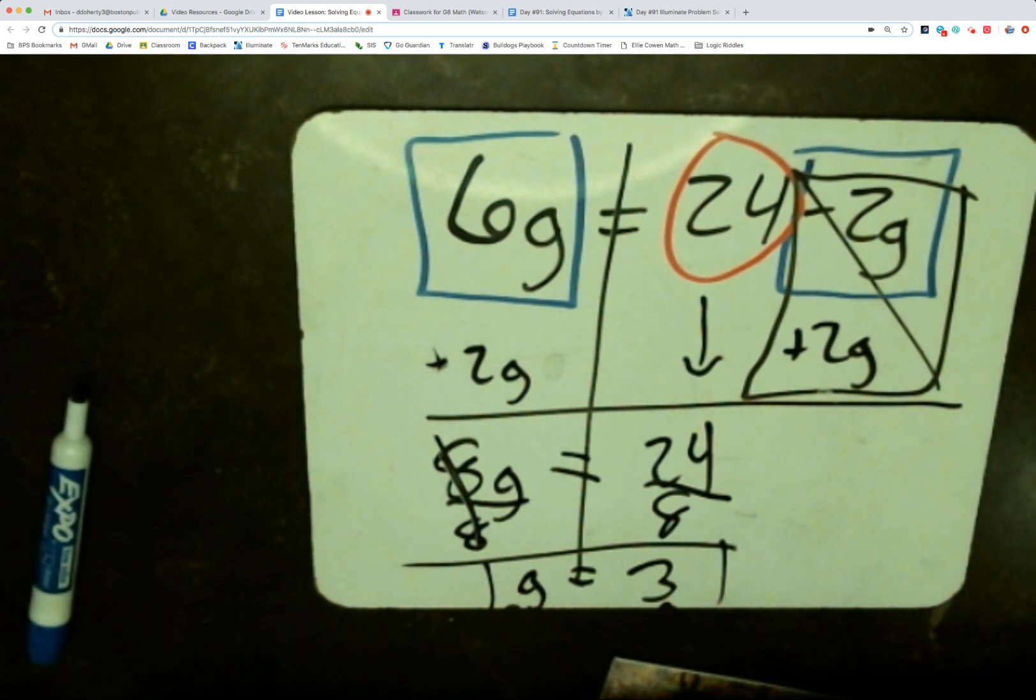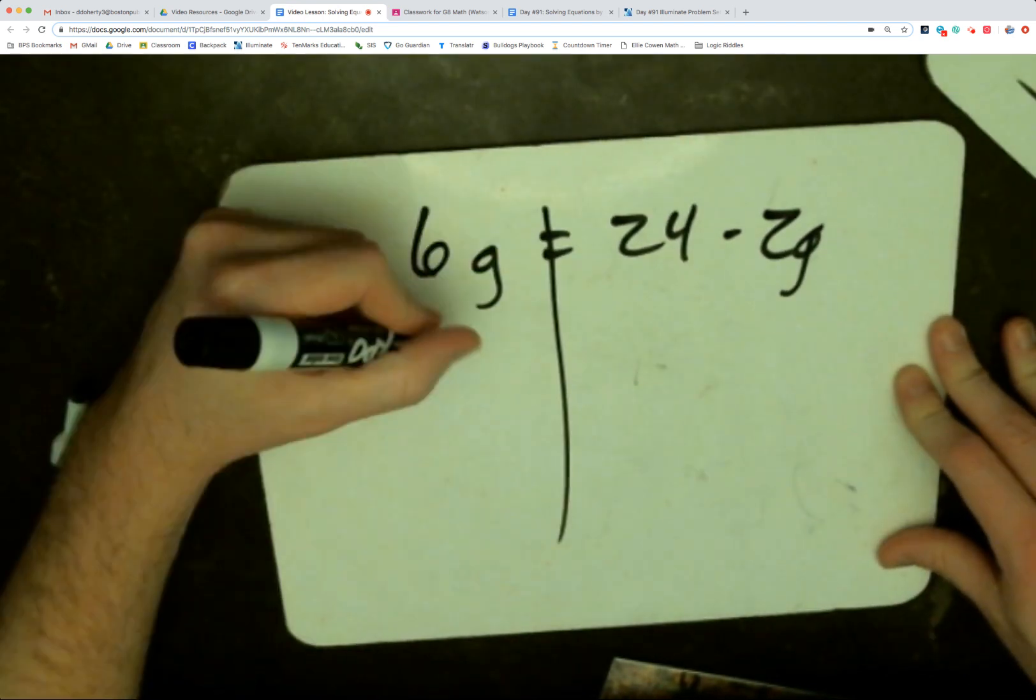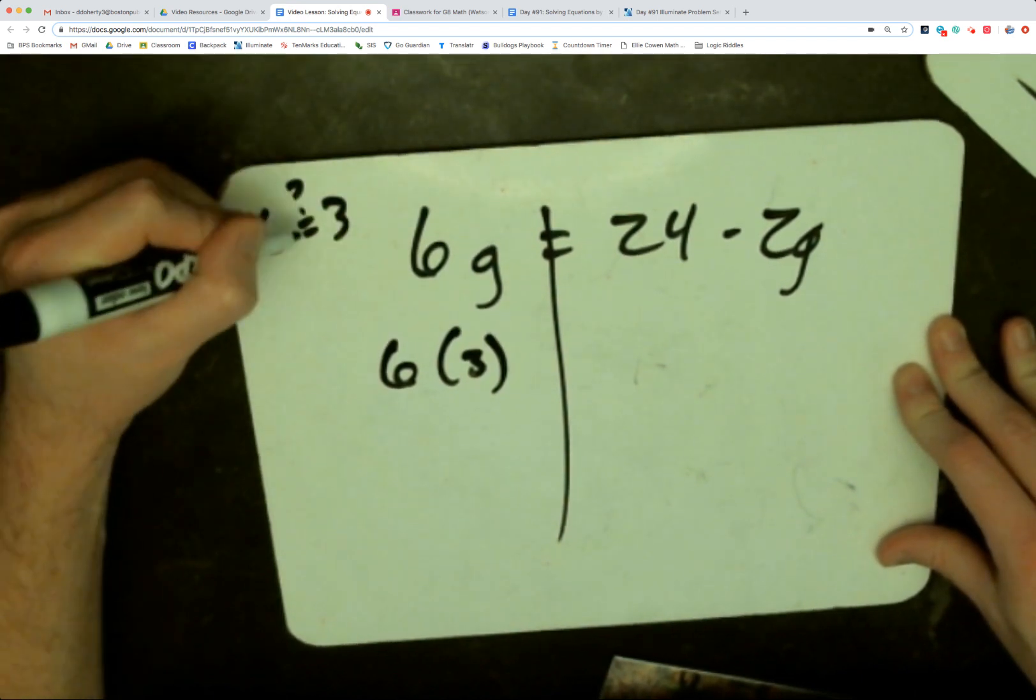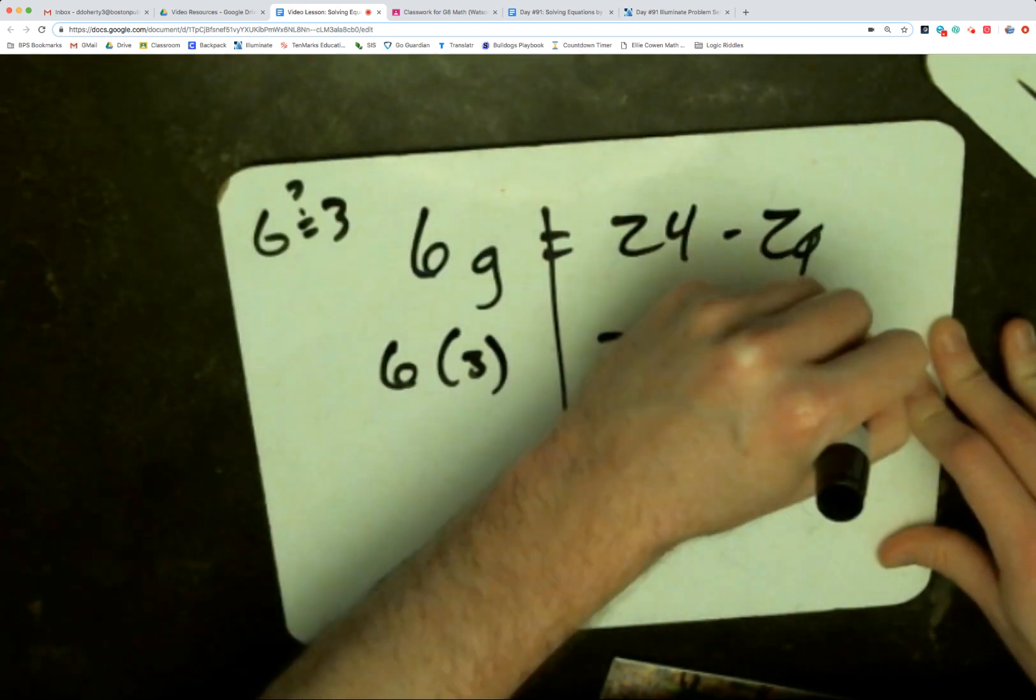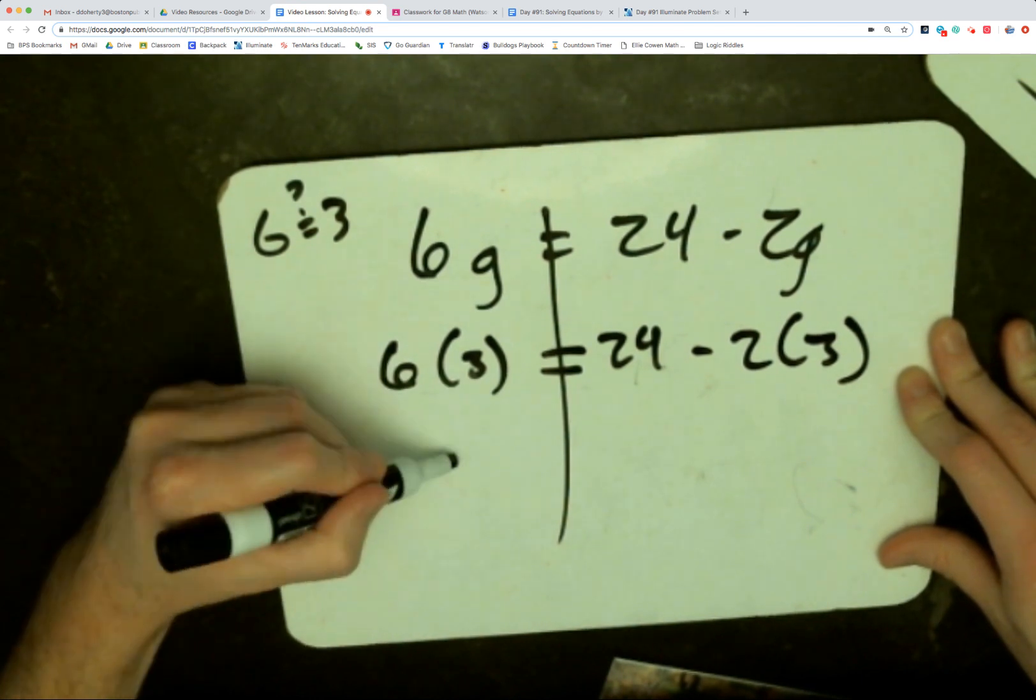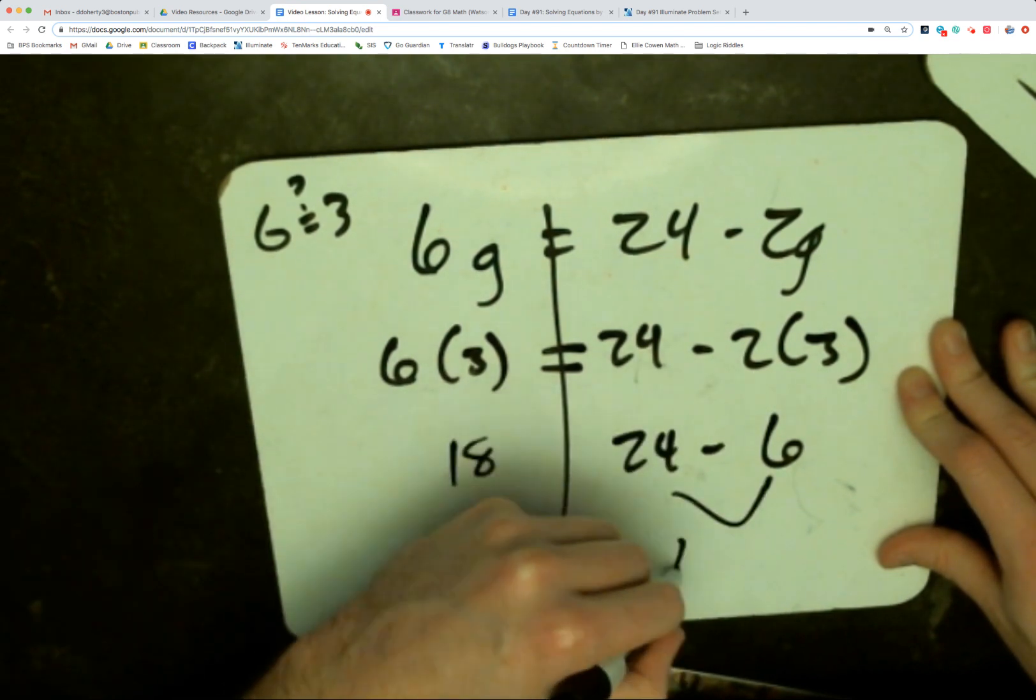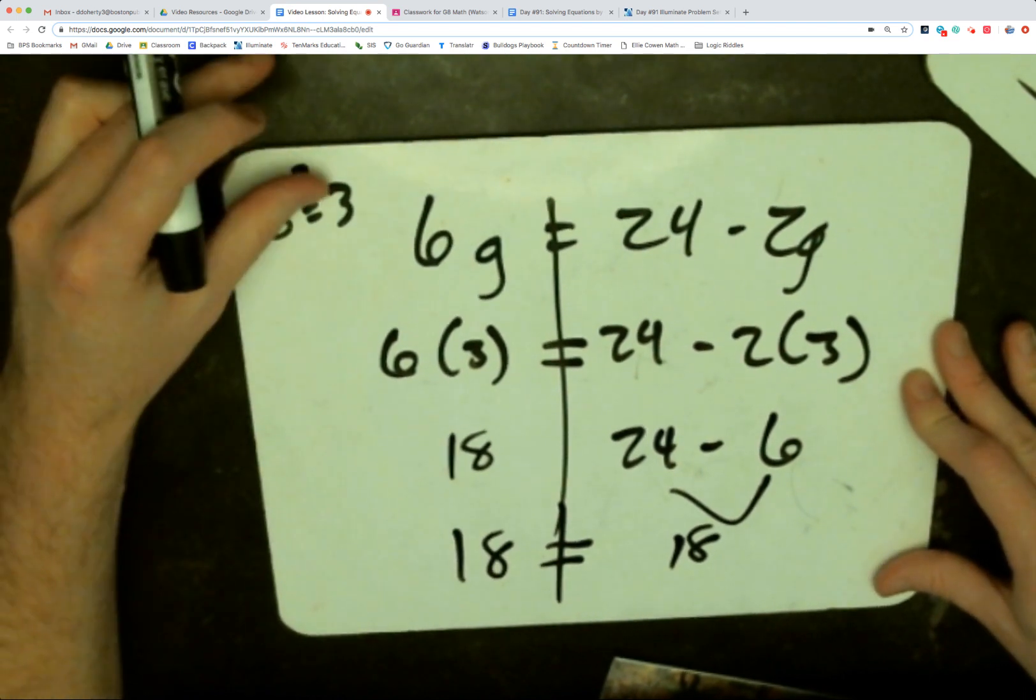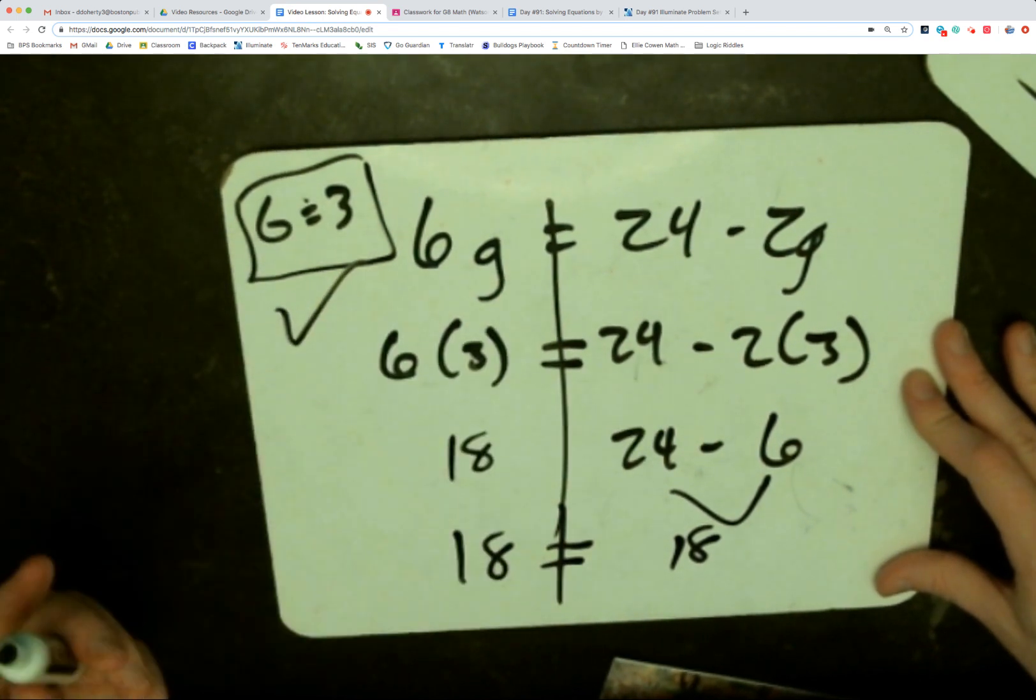We take our equation, 6g equals 24 minus 2g, and we're going to plug in this answer, g equals 3, to see if that works. 6 times g becomes 6 times 3 because I'm checking does g equal 3? That's my question. 24 minus 2 times 3. What does 6 times 3 give us? 18. What does 2 times 3 give us? 6. So we have 24 minus 6. 24 minus 6 leaves us with 18. Because 18 is equal to 18, I know g definitely is equal to 3. This answer here is correct because when I plug 3 into the equation, it creates a true statement. It works.